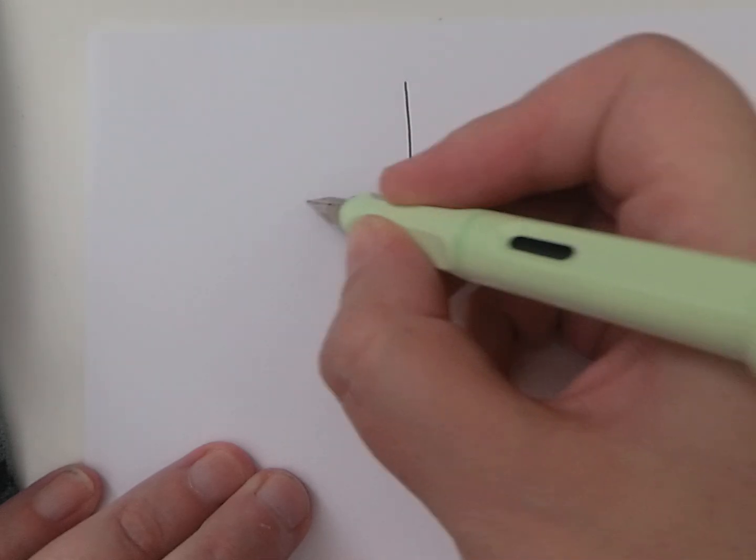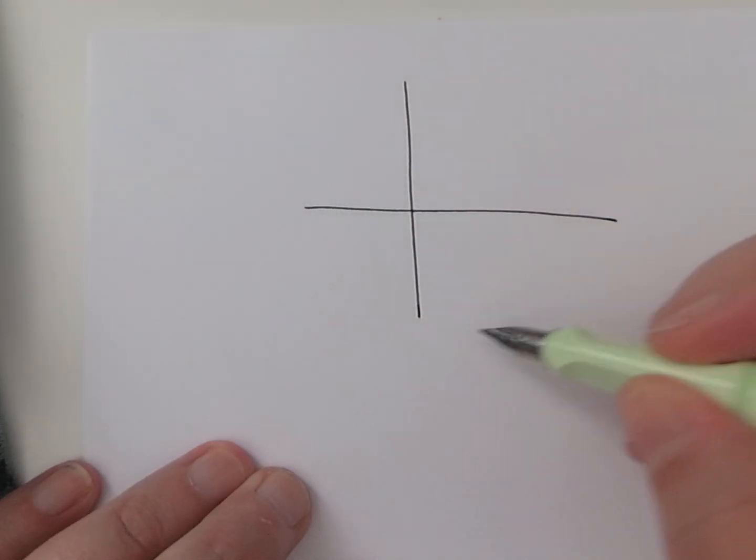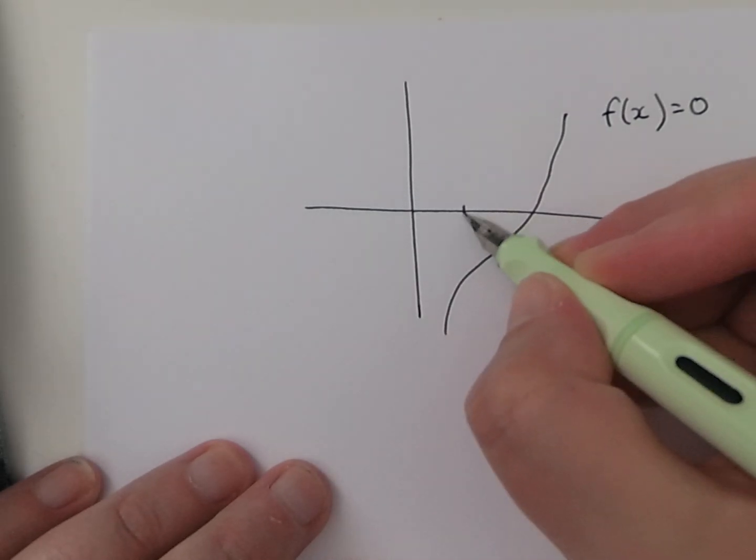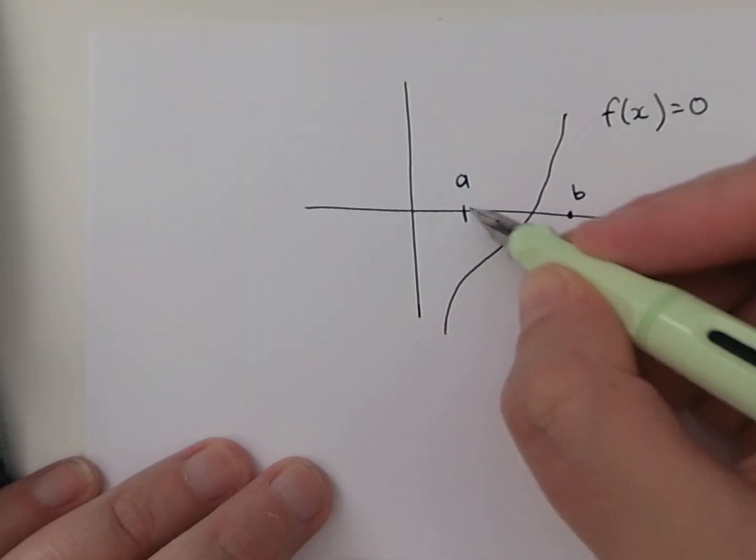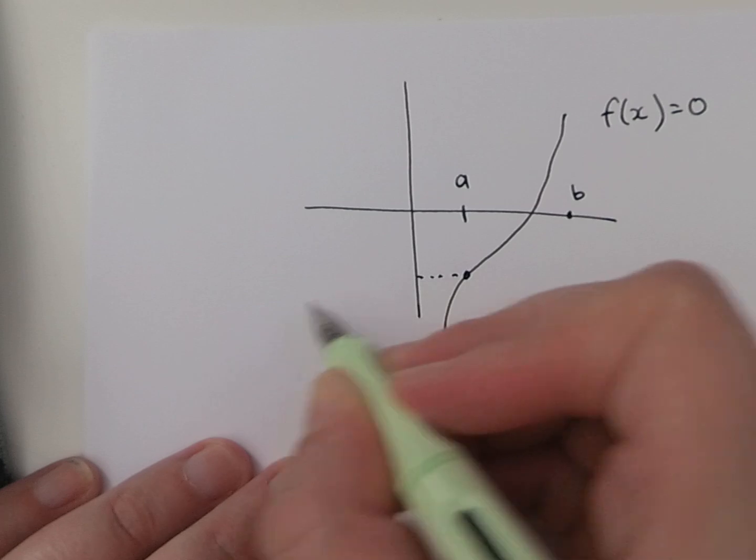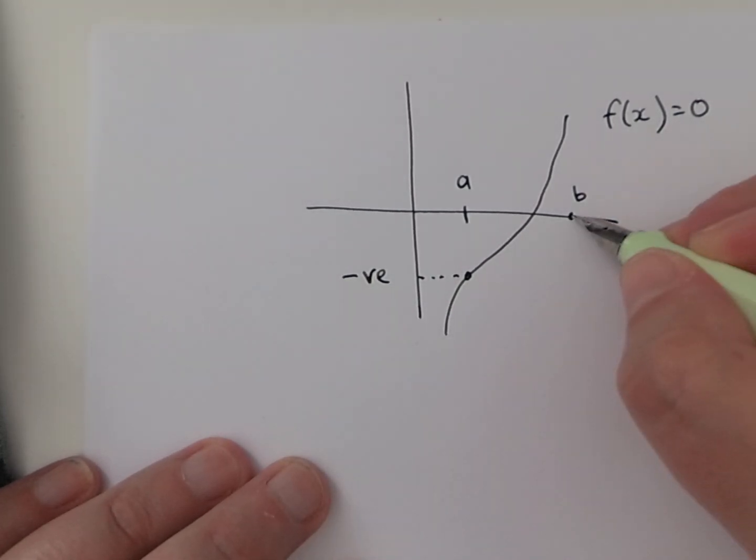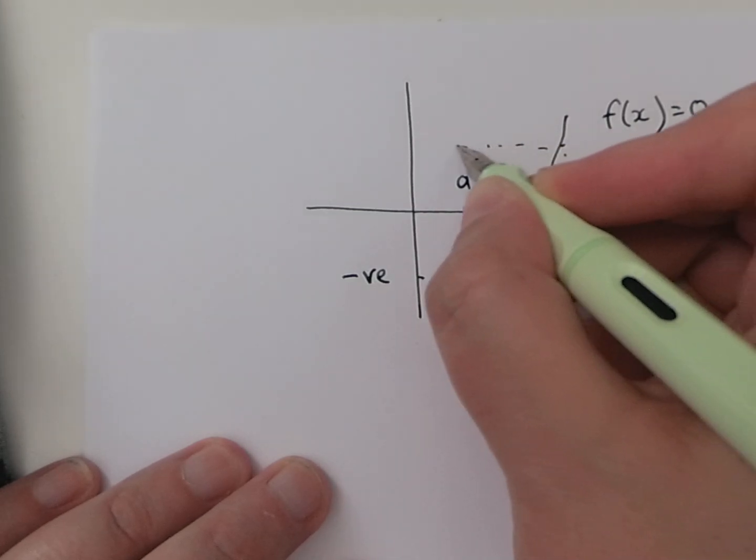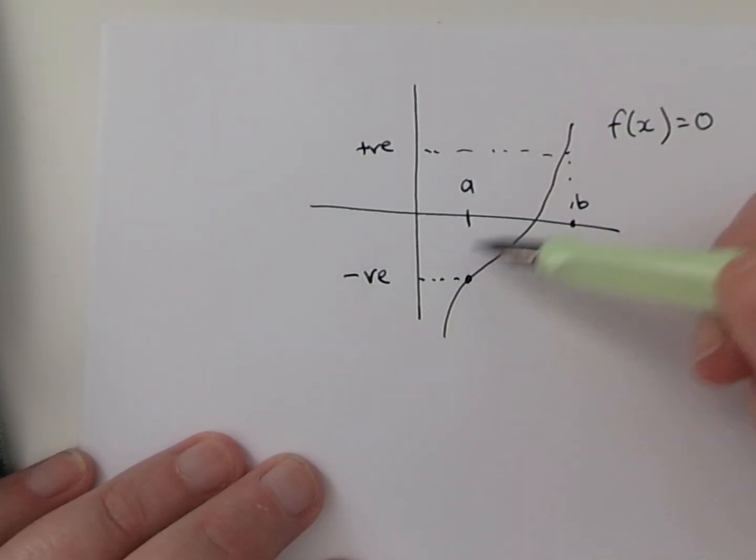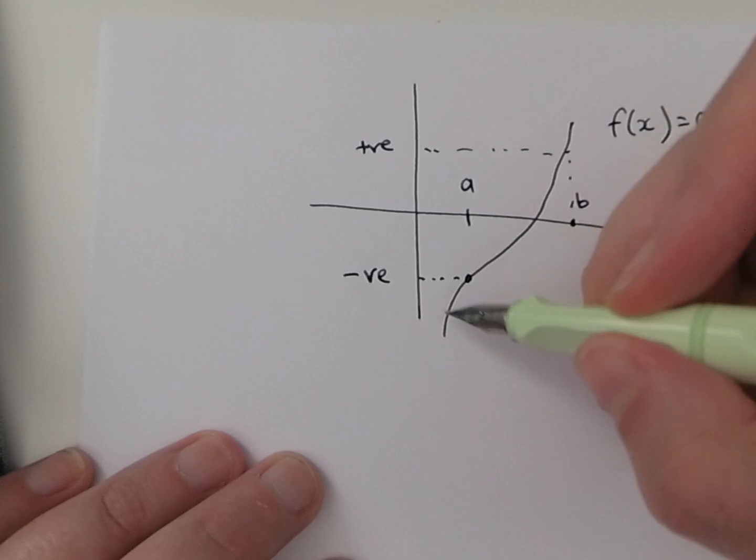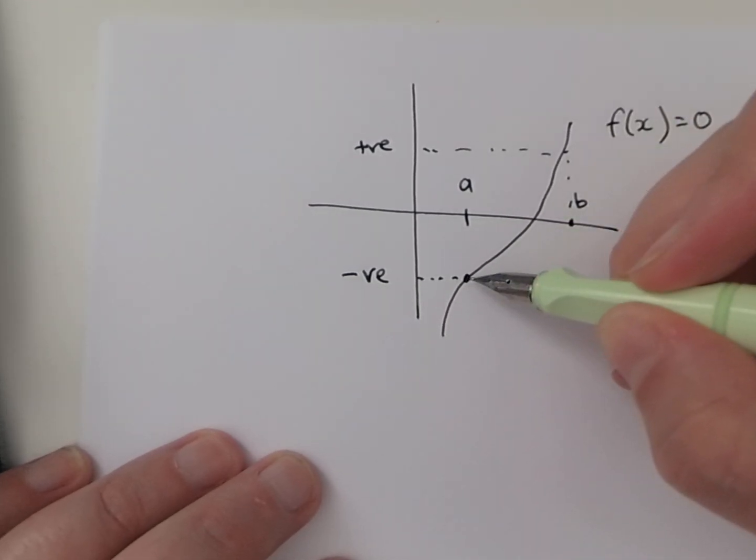So what is the change of sign rule? Well, the change of sign rule states that if you've got a continuous graph, and I know two values to put into this function, and my first value gives me a negative result and my second value gives me a positive result, because my sign has changed, my result has gone from negative to positive, and I know that my graph is continuous, it must carry on from this point to this point.